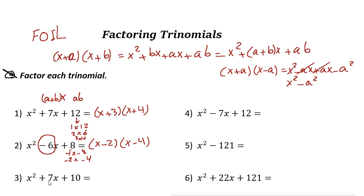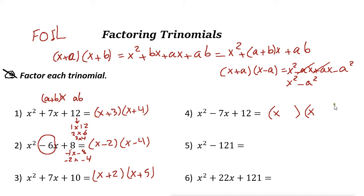Next: looking for two numbers that multiply to 10 and add to 7. Since 2 times 5 is 10 and 2 plus 5 is 7, it is (x + 2)(x + 5). For the next one, multiply to 12 and add to negative 7. Factoring 12 gives 3 and 4, but both must be negative, so it's minus 3 and minus 4, giving (x − 3)(x − 4).